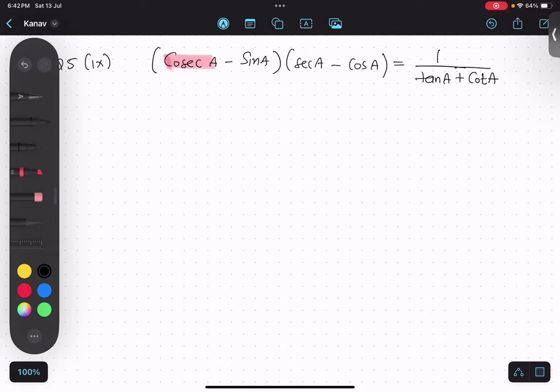Sorry, cosec A multiplied by sec A, minus cos A multiplied by cos A. Then we will multiply minus sin A, so minus sin A multiplied by sec A, minus minus plus, plus sin A.